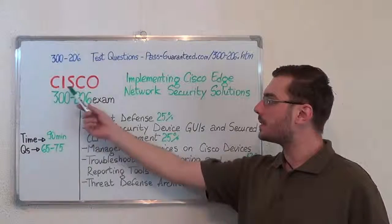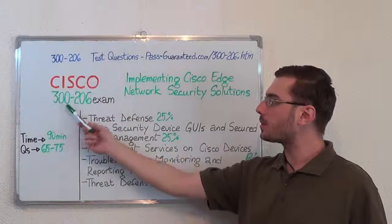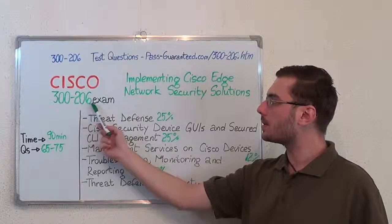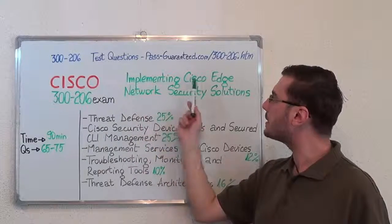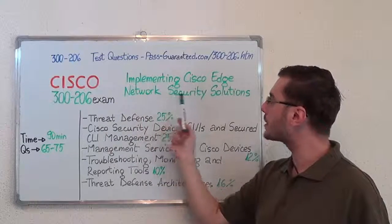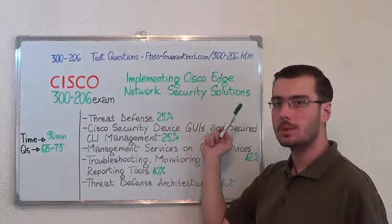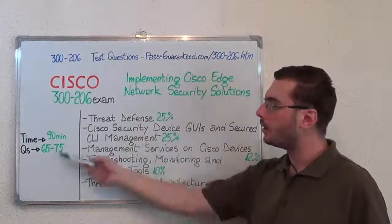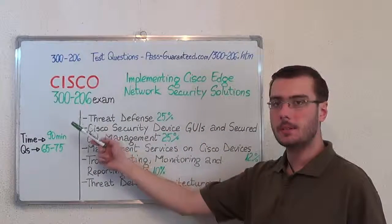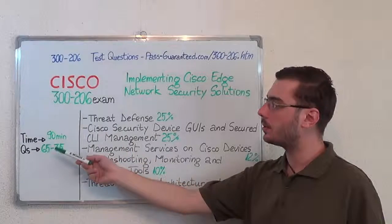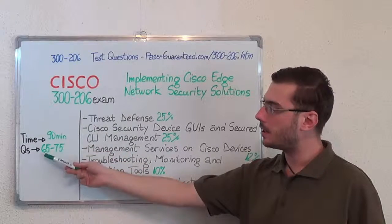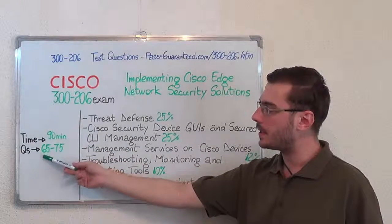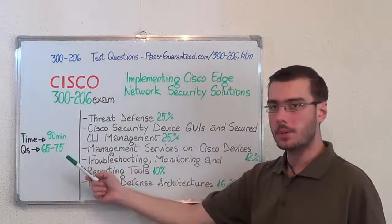Hello everyone. Today I will present you the Cisco 300-206 exam, Implementing Cisco Edge Network Security Solutions. Here we have some basic testing information. The duration of this exam is 90 minutes, and there are between 65 to 75 questions.